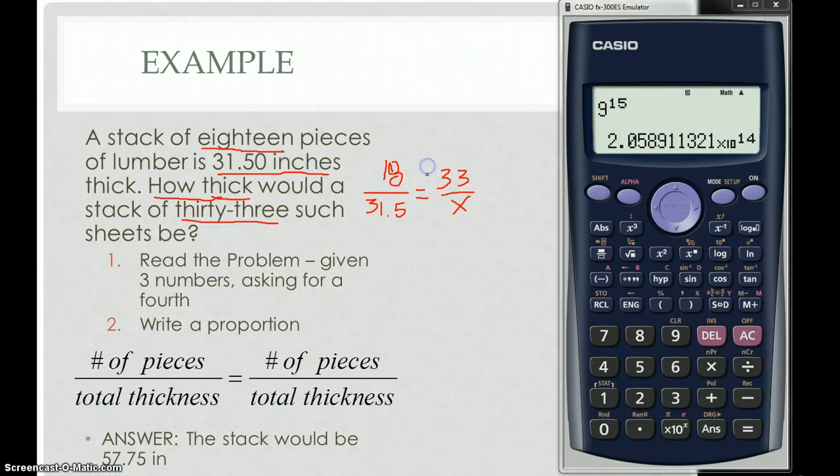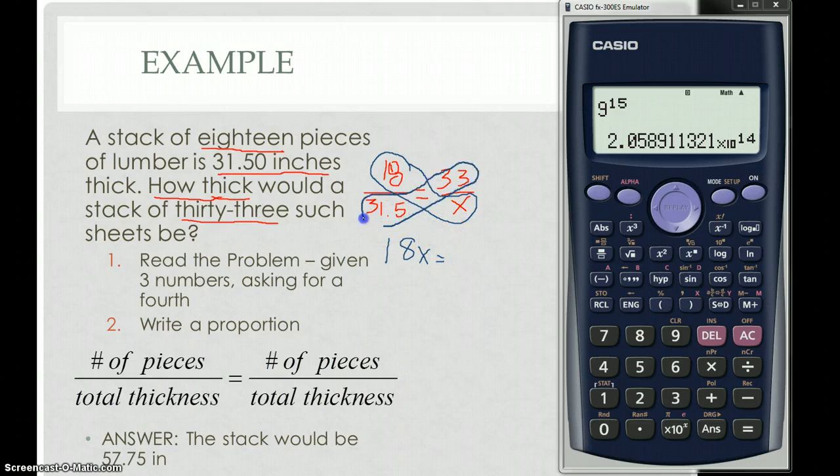I'm going to solve this problem by what is called cross-multiplying. So I take the top fraction number, and I multiply it across the equal sign by the bottom. So I get 18x, and that I keep my equal sign equals, and then I multiply, again, the top number and the bottom number. So I get 33 times 31.5. So I want to get x all by itself. It's 18 times x, so I'm going to divide both sides by x. So I divide, 33 times 31.5, divided by 18. And that's what I'm going to type into my calculator.